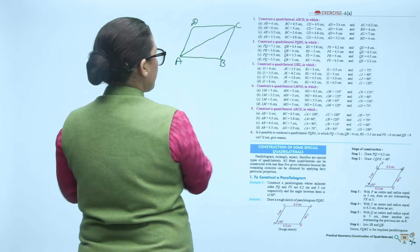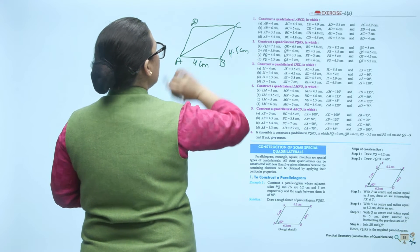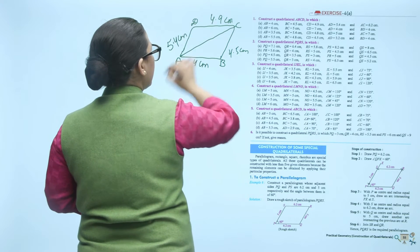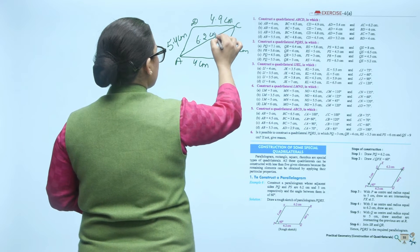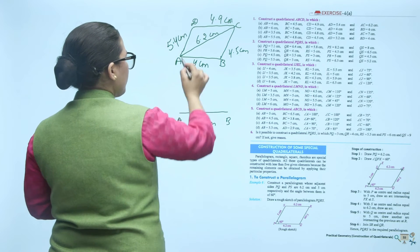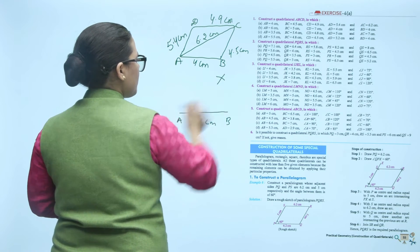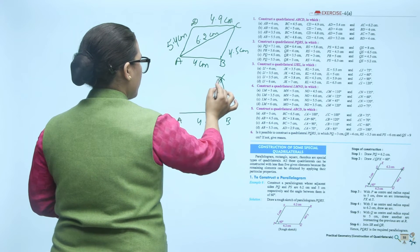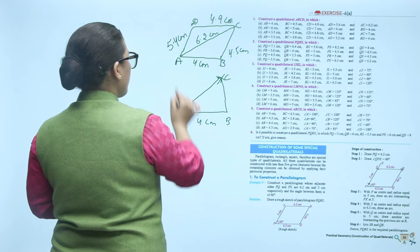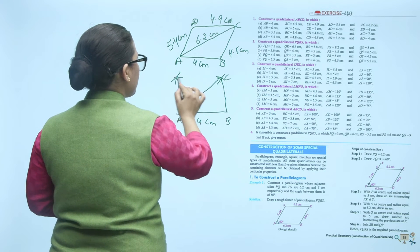You have a given line segment with these measures: AB is 4 cm, BC is 4.5 cm. Now take A as center with radius 5.4 cm and draw an arc, then from C draw an arc of 4.9 cm. This is how your quadrilateral is constructed.